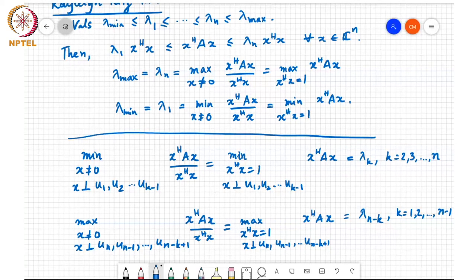if we were to minimize x-Hermitian Ax over x-Hermitian x subject to x being non-zero and perpendicular to u1, then the solution to that optimization problem is actually lambda 2, the next largest eigenvalue.